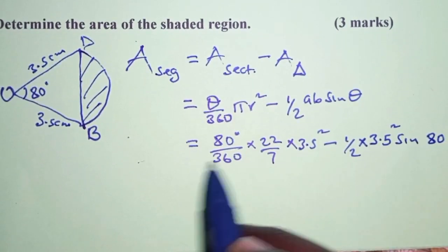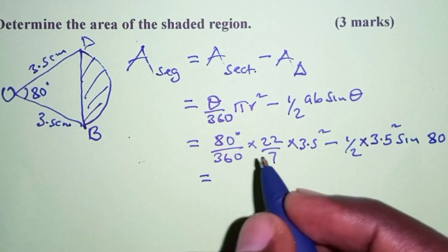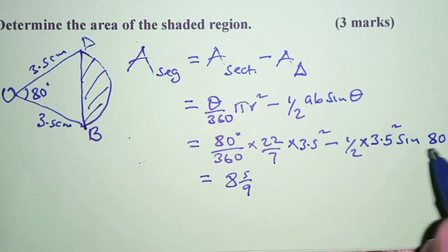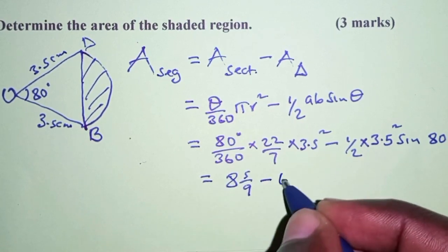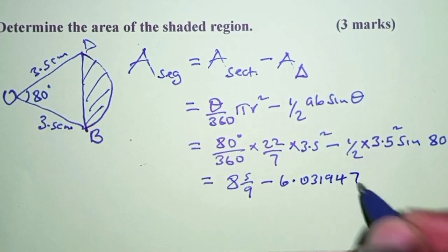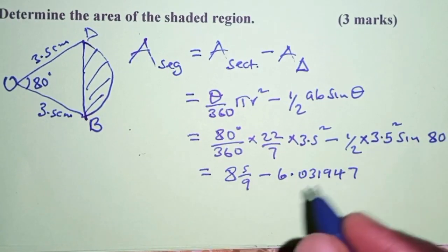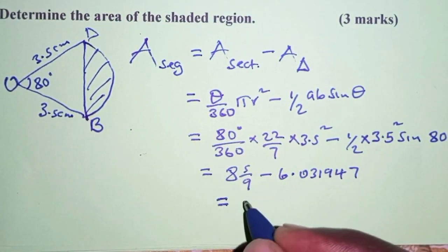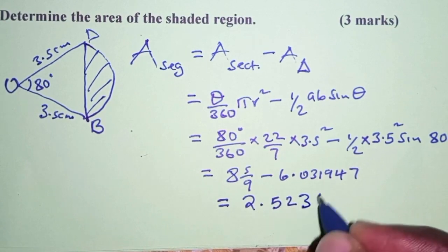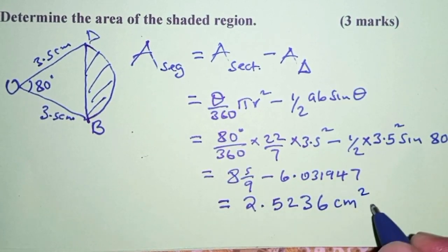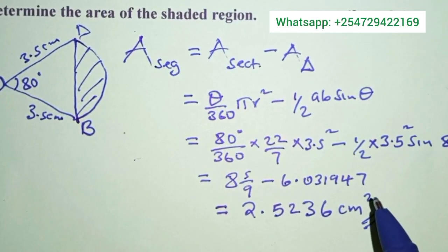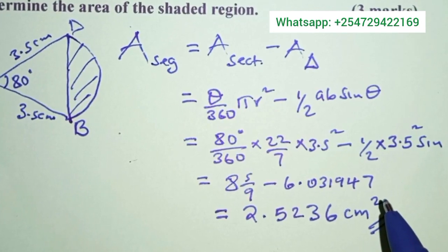Working this out: the sector area gives approximately 8 and 5 over 9, and the triangle area gives approximately 6.031947. Subtracting these, the area of the shaded region is approximately 2.5236 square centimeters. That marks the end of the solution to this problem. Thank you for watching — see you in the next one.